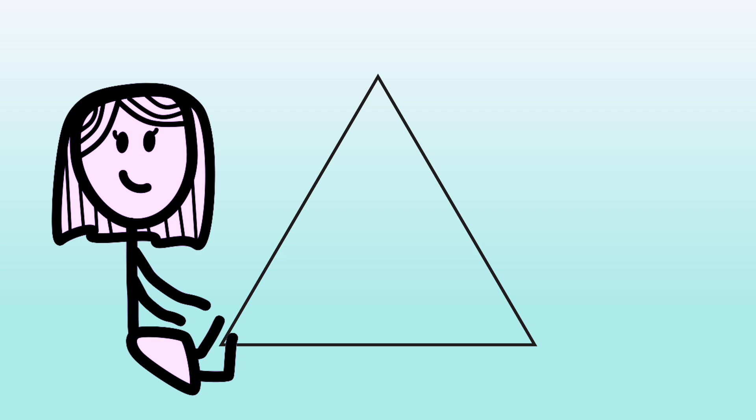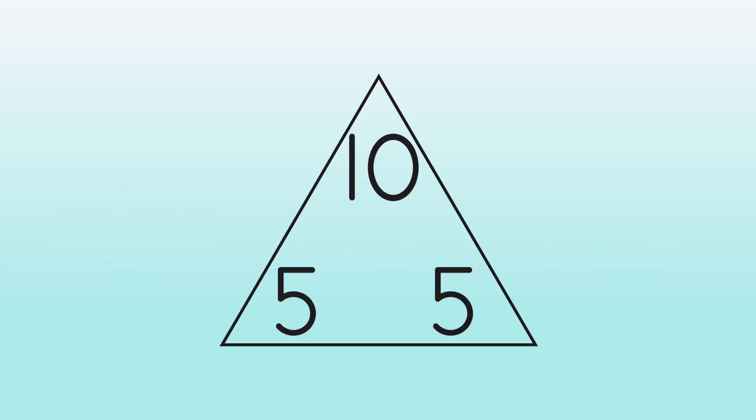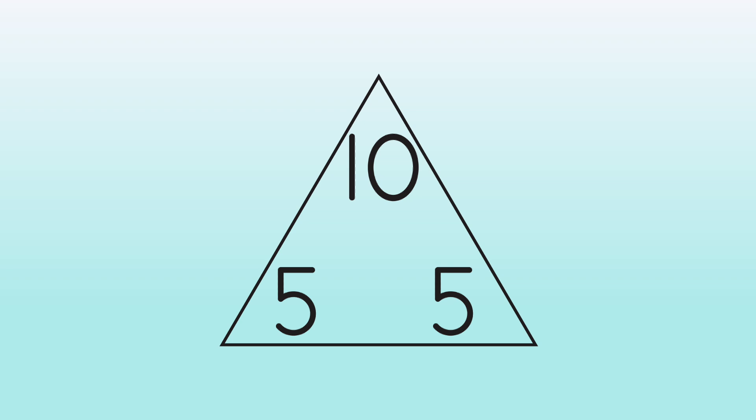A fact family triangle helps us to find these number sentences. And with the family 5, 5, 10, we get two number sentences. 5 plus 5 equals 10. 10 minus 5 equals 5.